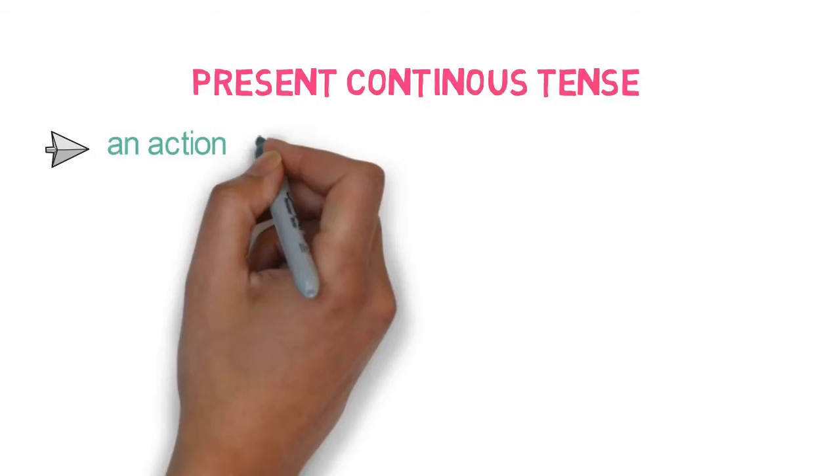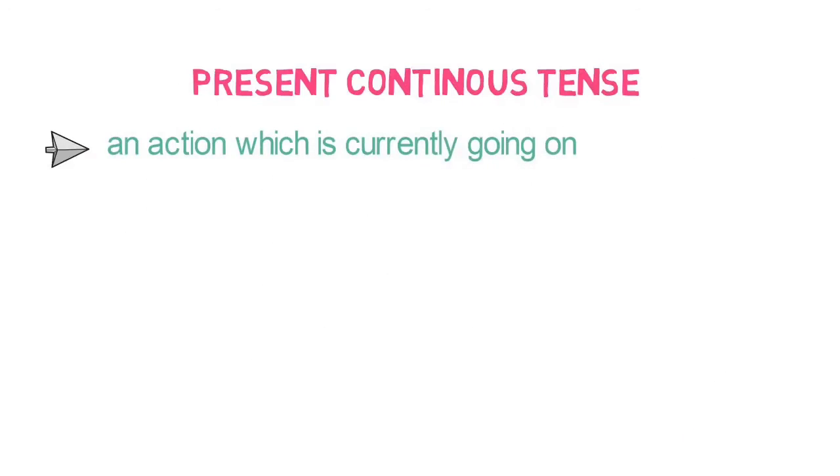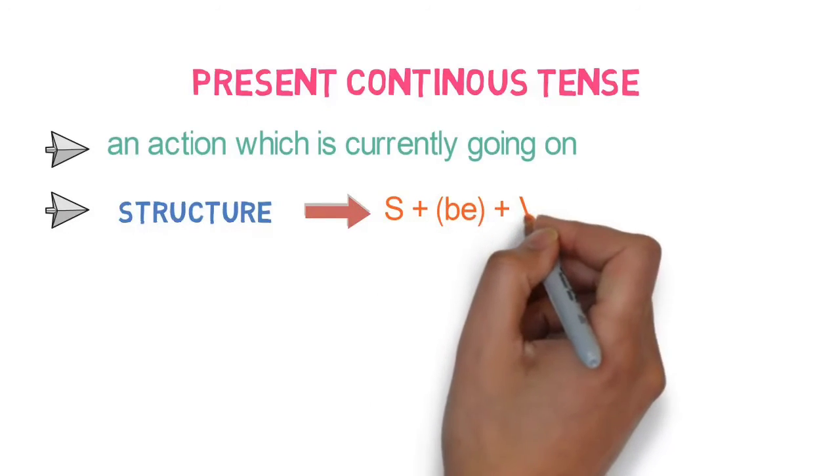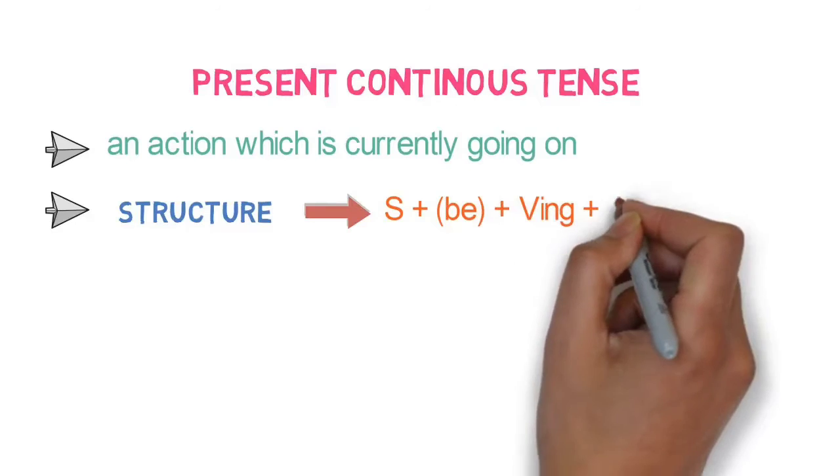Present continuous tense. It refers to an action which is currently going on. So the event is still going on by the time we are referring to it. Structure of it is subject plus be verb plus verb ing form plus object.